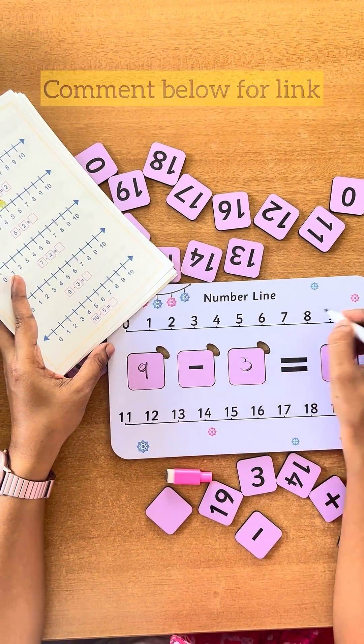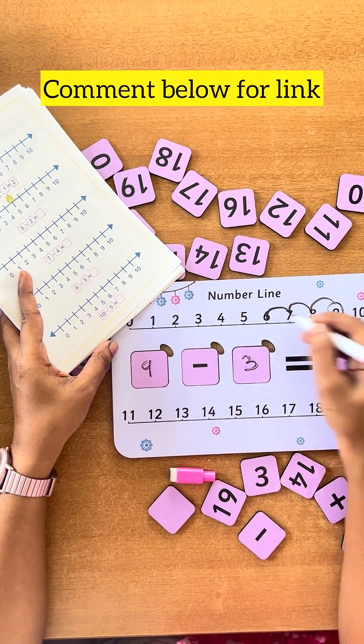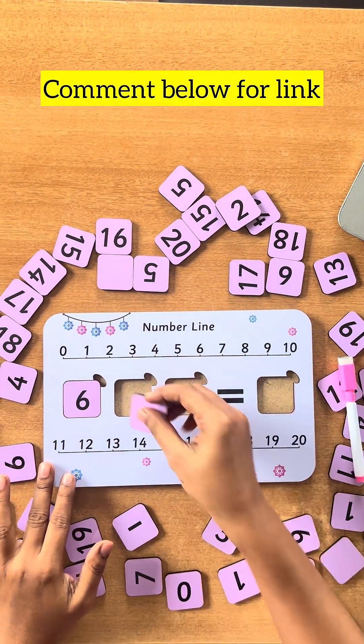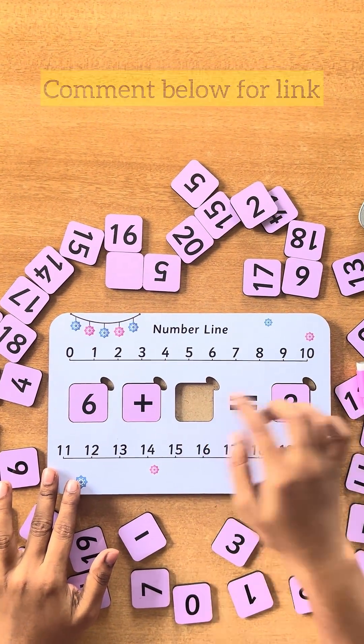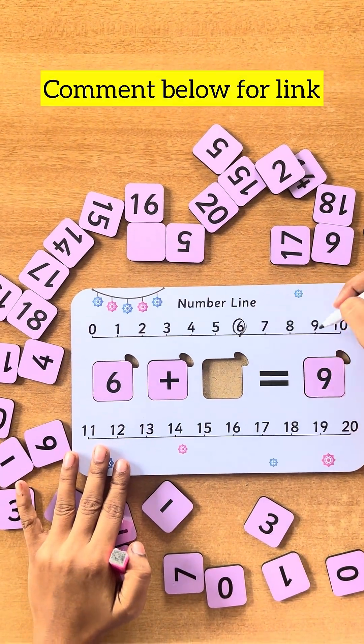And for subtraction, here the frog jumps three steps backward. We can also learn concepts like finding missing numbers. When the frog jumps from 6 to reach 9,